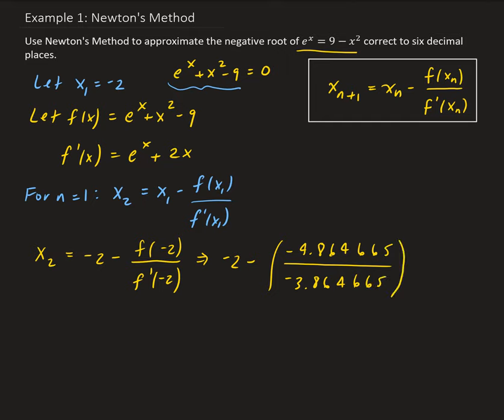You want to make sure that you use six decimal places because that's indicated in the problem. When we're doing our recursion and we start to get repeating values to six decimal places, that's when we can stop. So x₂, doing the above computation, gives us negative 3.258755. We can do the computation and round to six decimal places.